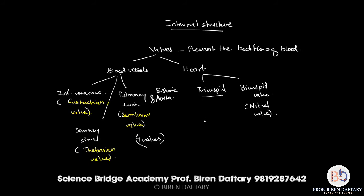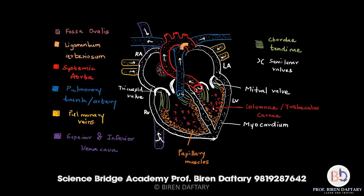These valves are called 'cuspid' because the cross-section of the tricuspid valve shows three cusps, while the bicuspid valve shows just two cusps. The bicuspid valve is also called the mitral valve because a mitre — the type of hat the Pope wears — has a double folding similar to the two-cusped structure of this valve.